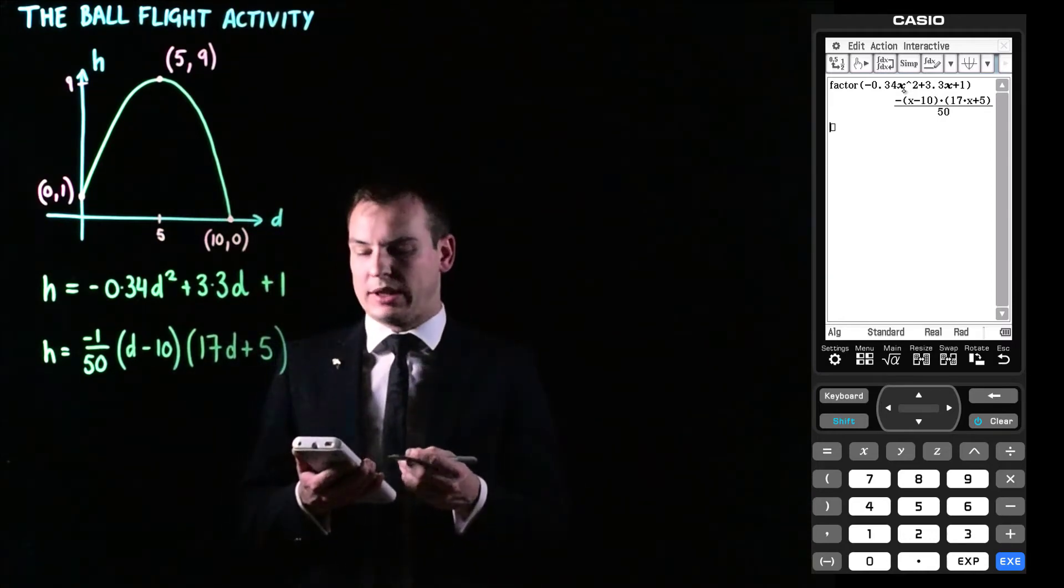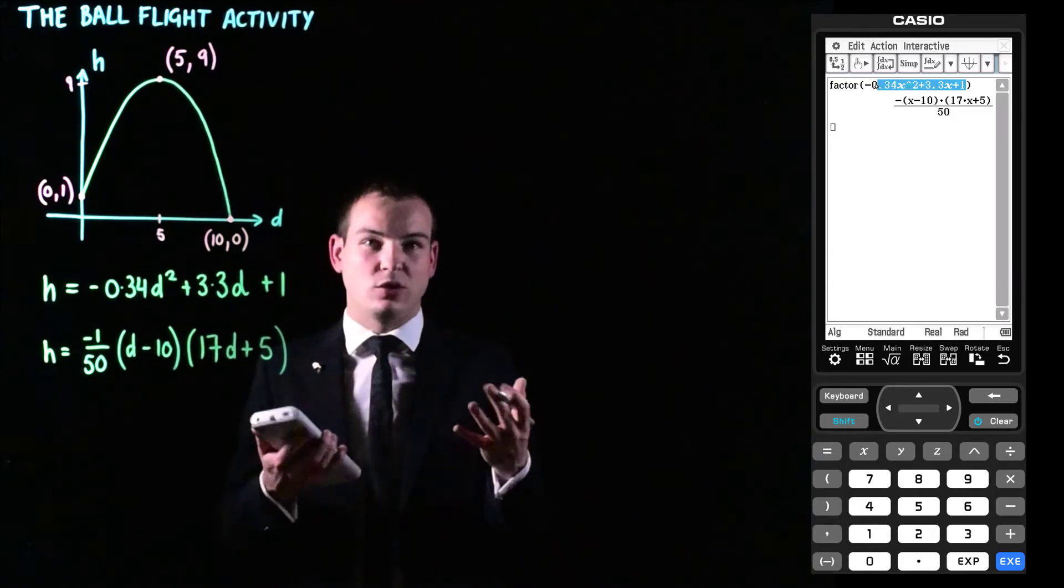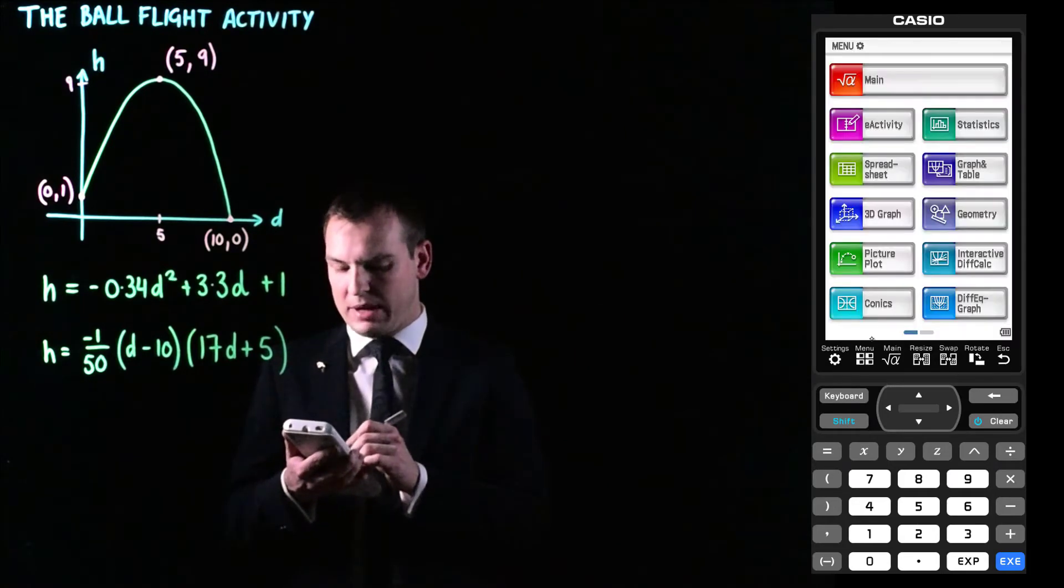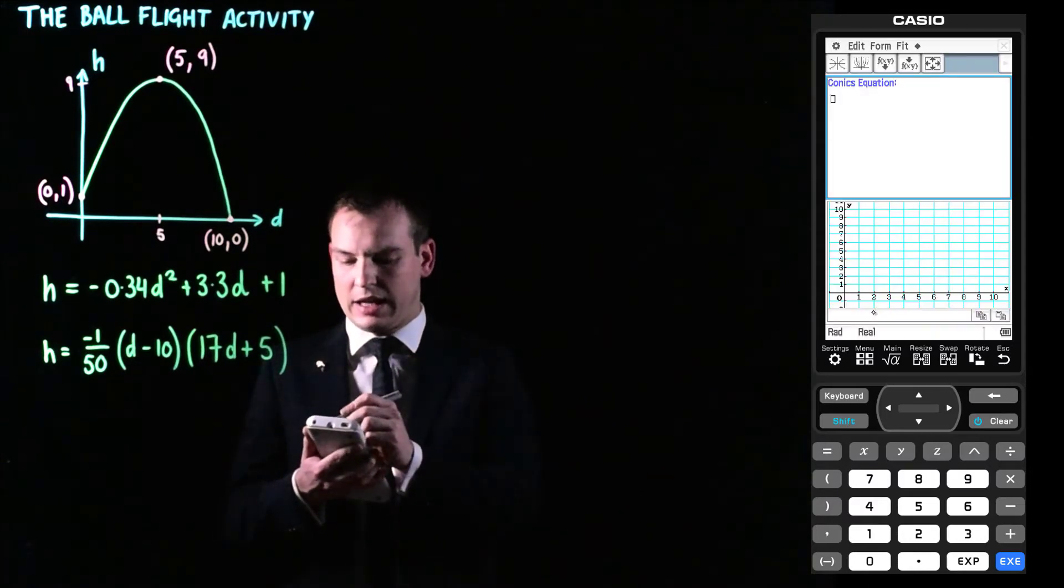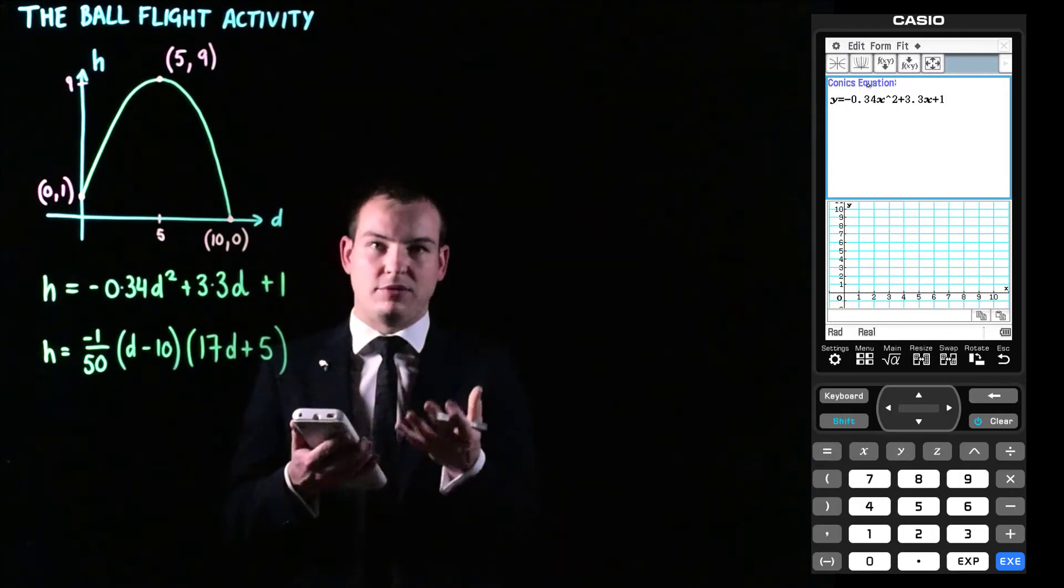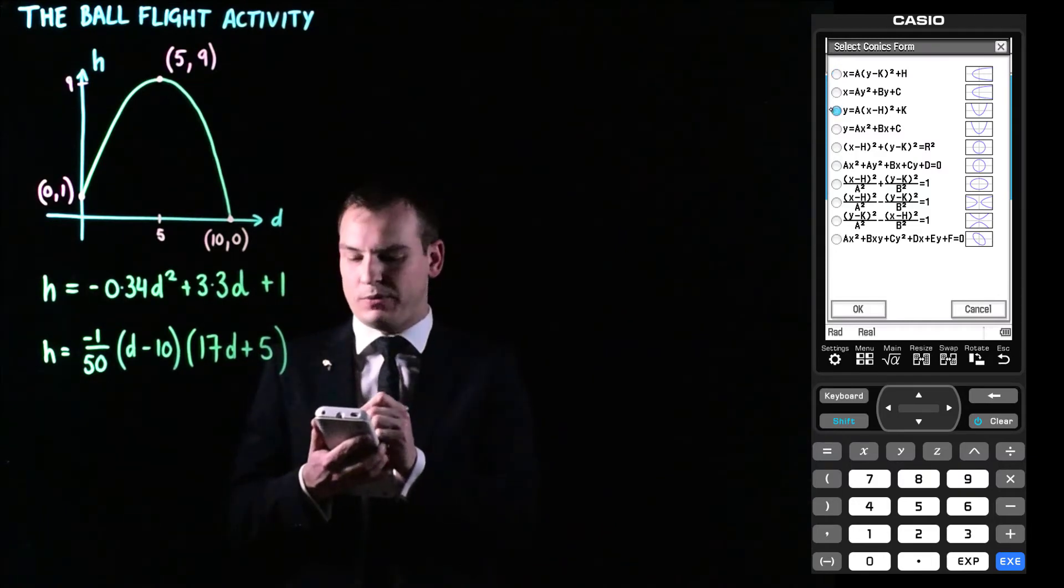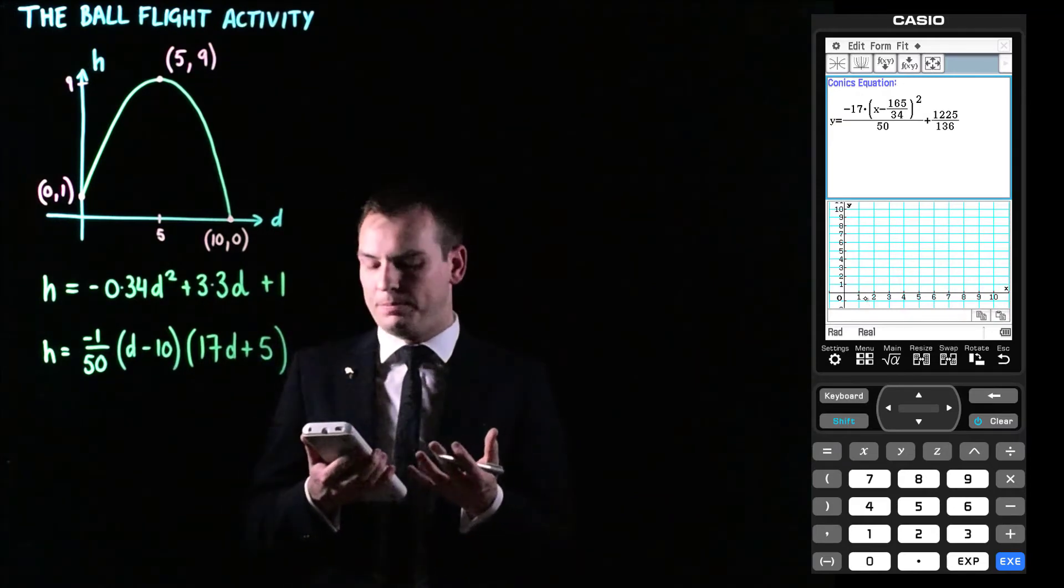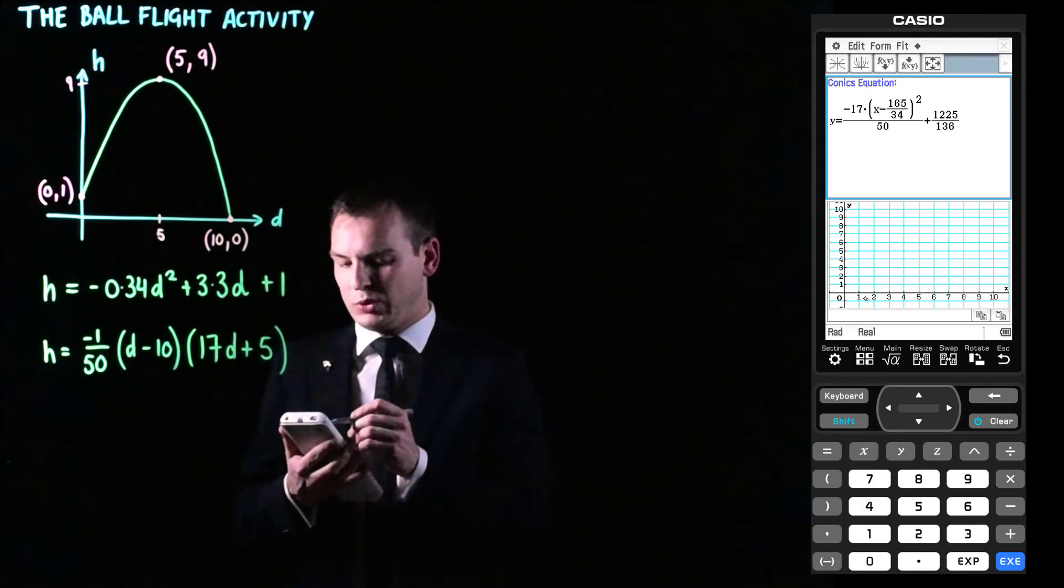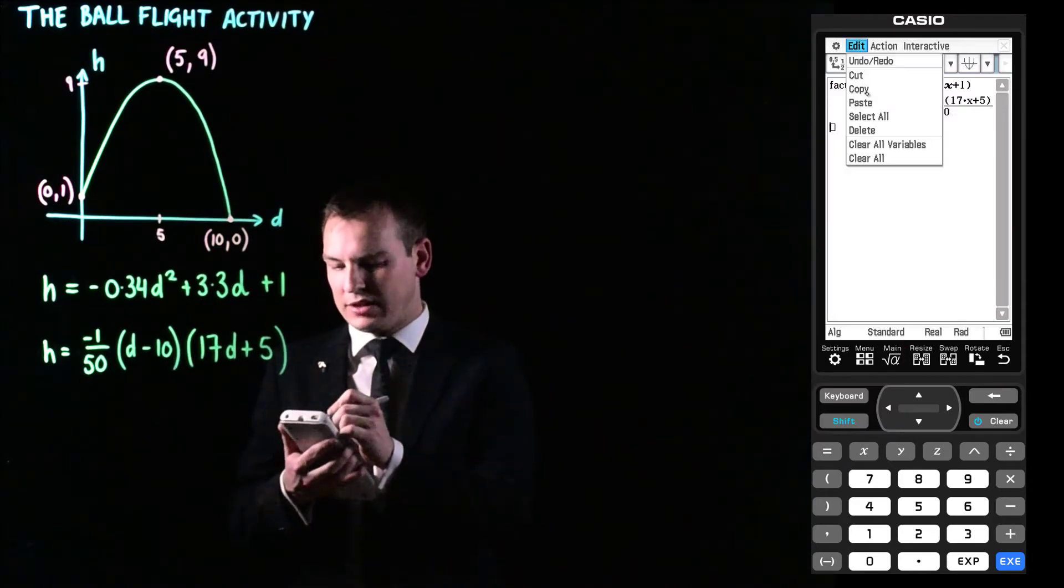The last thing that you might consider doing with the calculator is finding the turning point form. So we can do that. So what we're going to do is we're going to copy out the expanded or general form. And I'm just going to go edit copy so that we have that stored in the calculator's memory. And then going to the menu, we can find the conics menu. And in here, we can now go and paste in after we type in Y equals. We can go edit, paste, and that will have the expanded form in. And then we can go fit into conics form. And the third one down you can see is that turning point form. And clicking on there and then OK converts this into turning point form. And you can see this calculator has given us the exact values for A, H, and K. But for this video, I think decimals would be enough. So I'm just going to go ahead and I'm going to copy that. And then going to the main menu, I'm just going to paste it in here. So edit, paste.